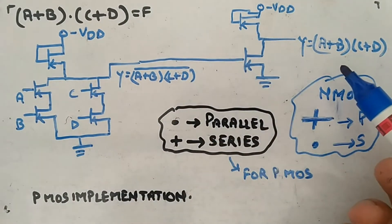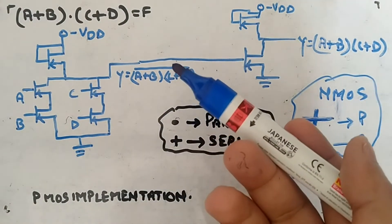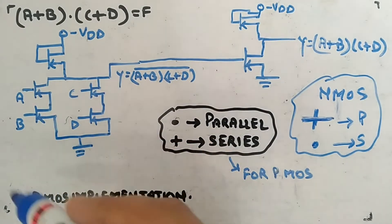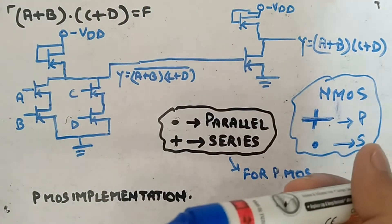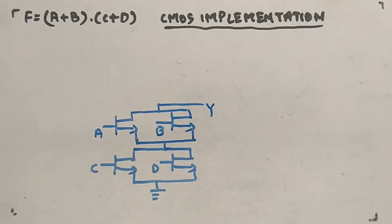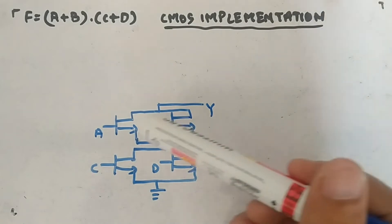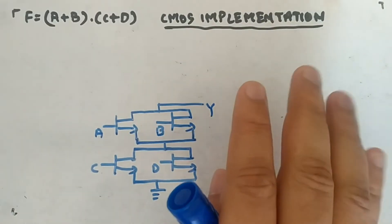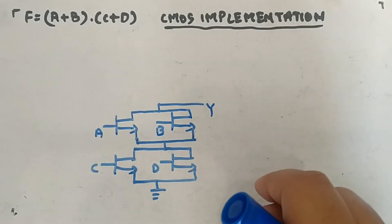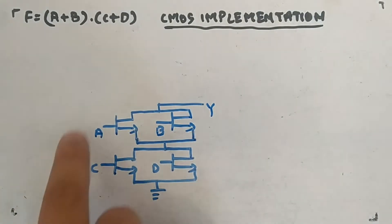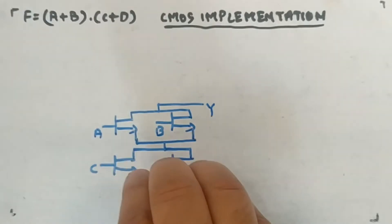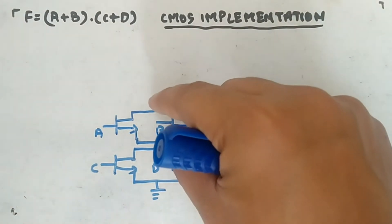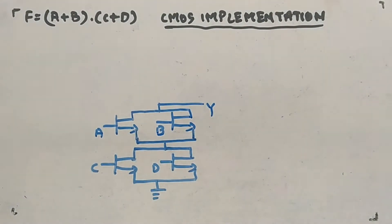You have used only PMOS for the construction of this logic function. Now the same thing we will do with CMOS, utilizing both PMOS as well as NMOS. Below y you will have the NMOS structure; above y you will have the PMOS structure. Here you can see the CMOS implementation. I have made the NMOS part first — plus means parallel, dot means series — so a + b means a parallel with b, dot means series.